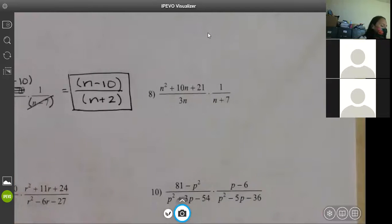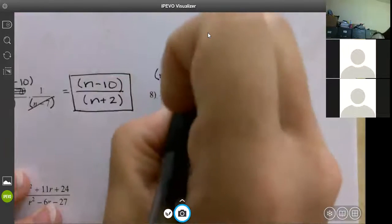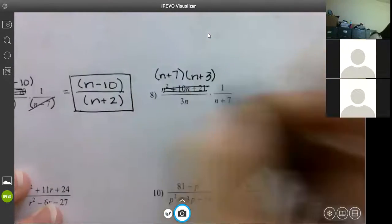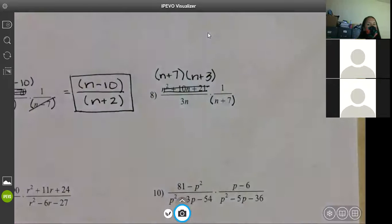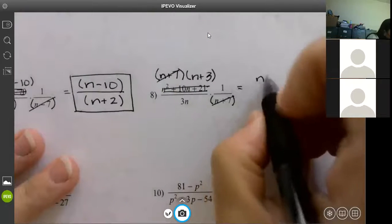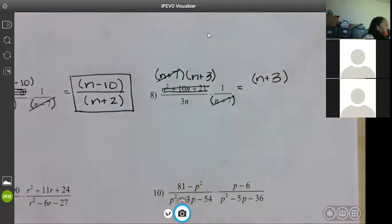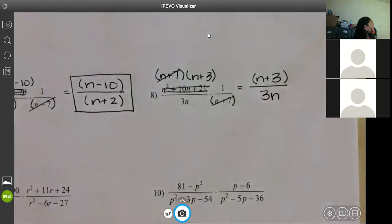Factor the top. Factors of 21 that add to 10. Three and seven. On the bottom, 3N will not factor. It can stay there. One will not factor. N plus seven will not factor. What can I mark out? N plus seven. That causes a hole at negative seven. On the top, the only thing I have left is N plus 3. On the bottom, I have 3N. None of that can cancel out. Don't try to cancel the threes out or try to cancel the Ns out. They don't work. However, I do have a vertical asymptote where? Zero. Perfect.